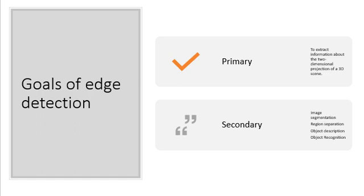So what is the goal of edge detection? There are two types of goals: primary and secondary. Most of the shape information of an image is enclosed in edges. So first we detect these edges in an image using filters, and then by enhancing those areas of the image which contain edges, the sharpness of the image will increase and the image will become clearer. To produce a line drawing of a scene from an image is the main important goal of edge detection.